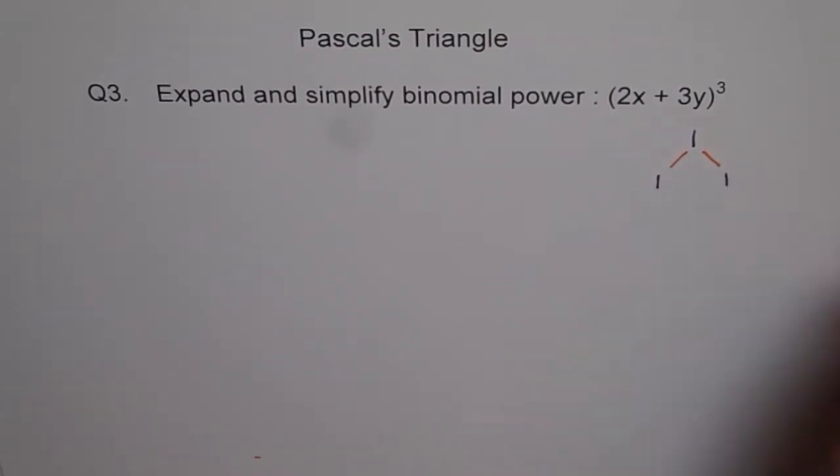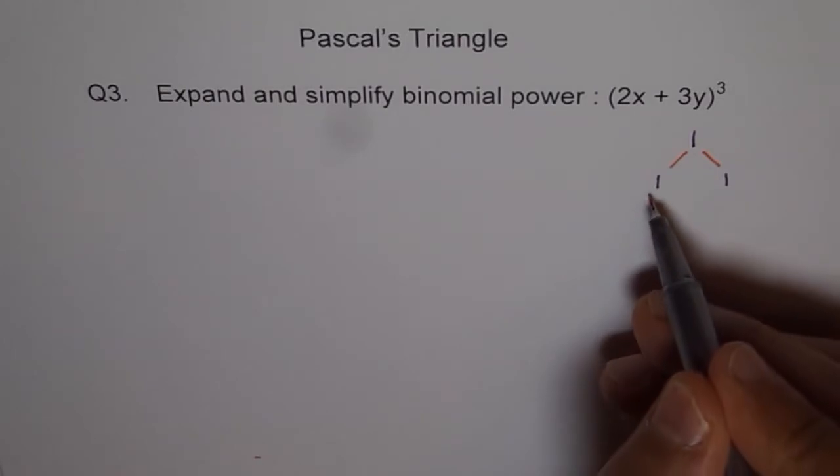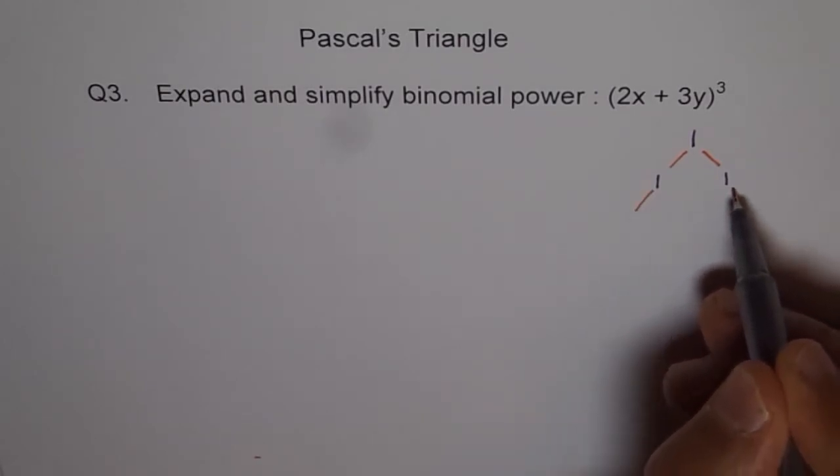There's only one way of going diagonally downwards. So here, the second row also will have 1 and 1, but when you come in the center, then there are two ways.